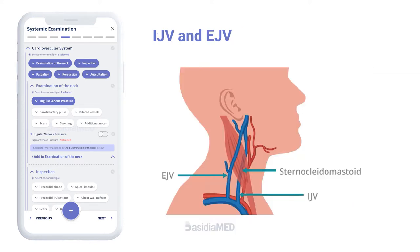Among the jugular veins, the right internal jugular vein is chosen over the external jugular vein, as it directly connects to the right atrium without any intervening valves. Do not confuse it with the external jugular vein, which is more accessible but less reliable. The external jugular vein is superficial to the sternocleidomastoid, while the internal jugular vein is deep to it.